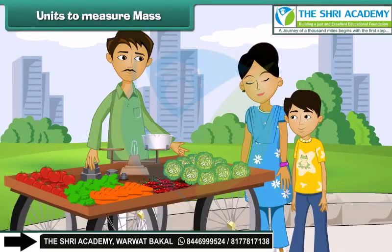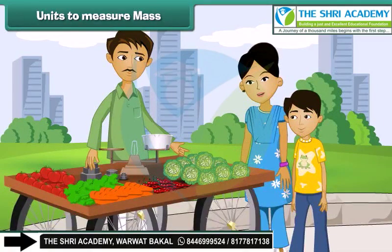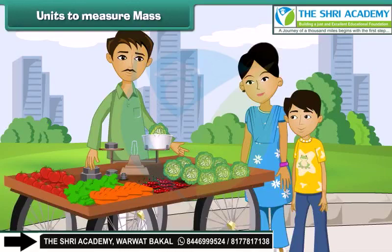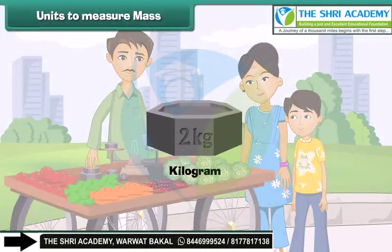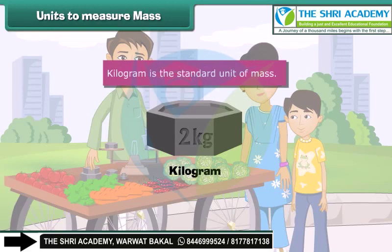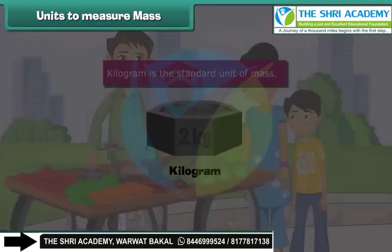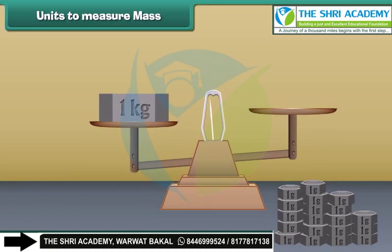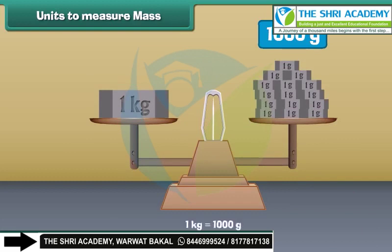You might have gone with your mother to buy vegetables. You must have heard her asking for 1 kilogram cabbage, 5 kilograms potatoes, 100 grams green chili, etc. from the vegetable seller. Kilograms and grams are the two units used for measuring mass, among which kilogram is the standard unit. If one kilogram is divided into 1,000 parts, then one part is called a gram. So one kilogram equals 1,000 grams.